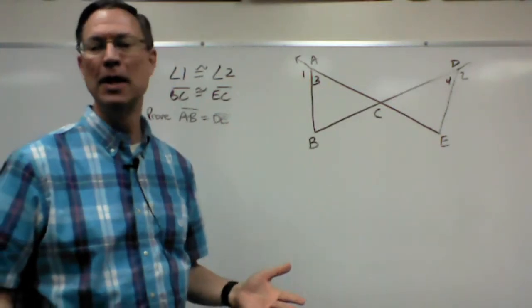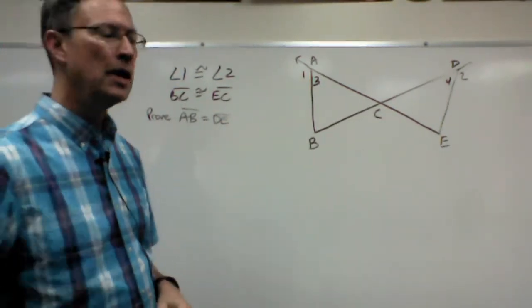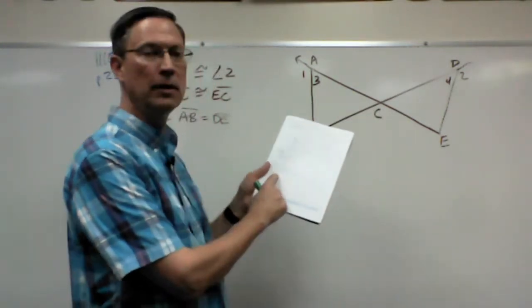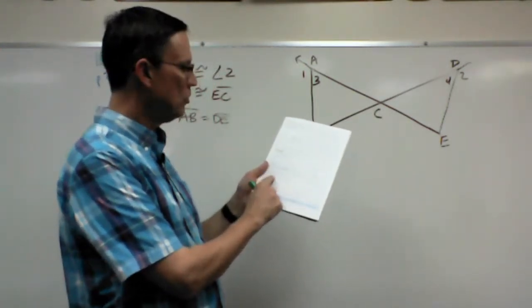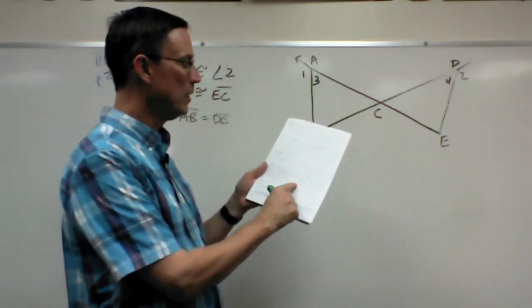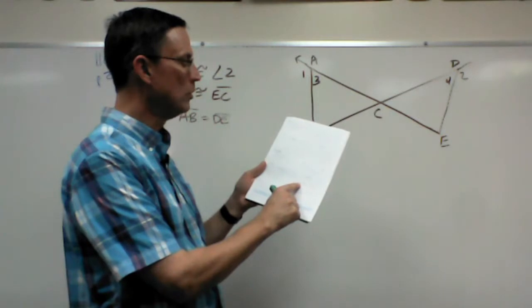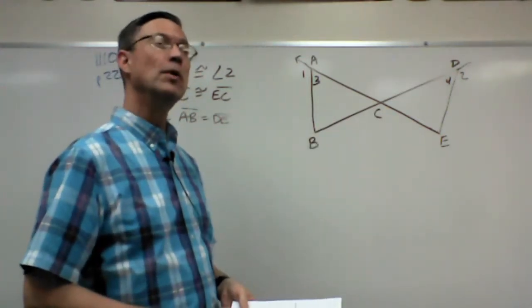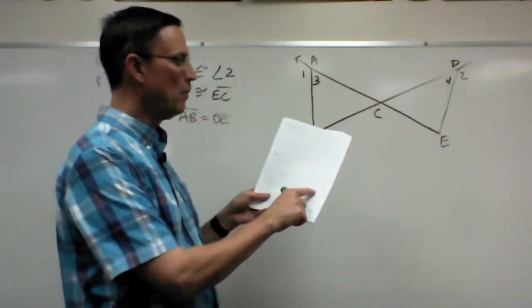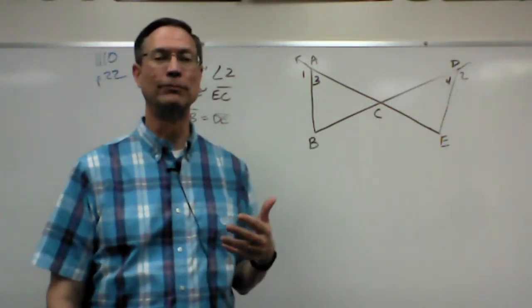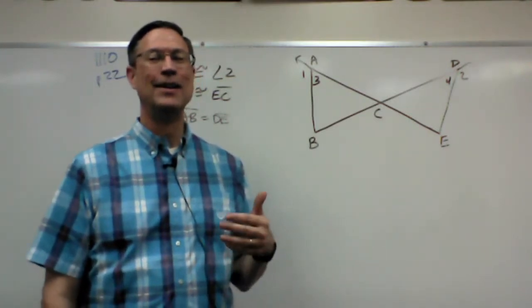Now the second one is already partially filled in. It says angle 1 and angle 3, and then there's a line, angle 2 and angle 4, and then there's a line, and then the statement is blank. The adjacent angles formed are always supplementary.